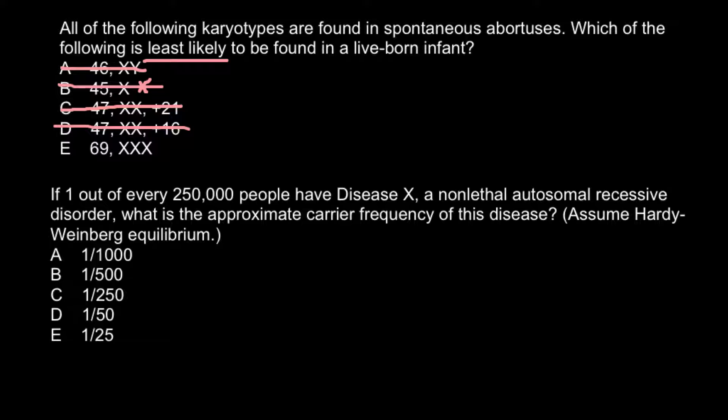What we are left with is Answer E: 69 XXX. What does this mean? We have two sets of chromosomes — 23 from the mother's side and 23 from the father's side, totaling 46. Here we have a full extra set of chromosomes. For example, if non-disjunction happened in the egg, two sets of chromosomes could be present. Then 46 plus 23 chromosomes from the sperm gives us this karyotype.